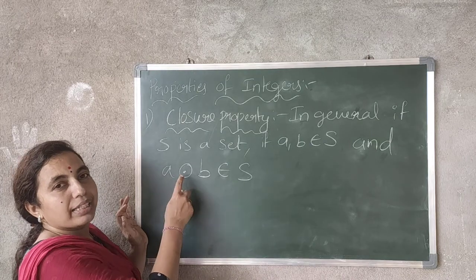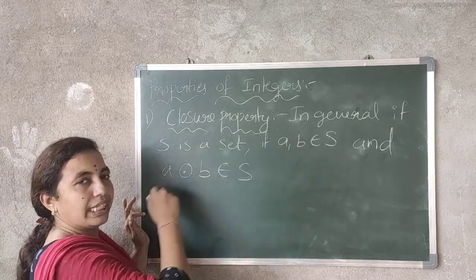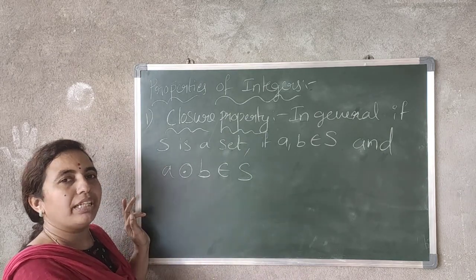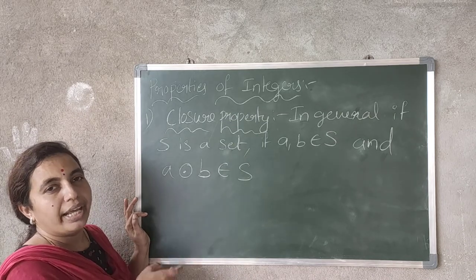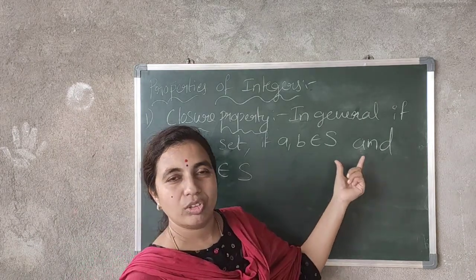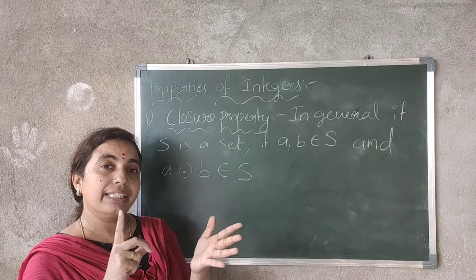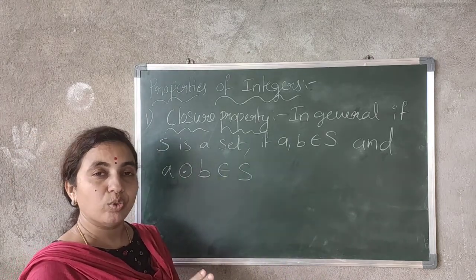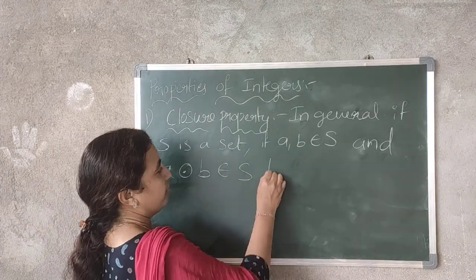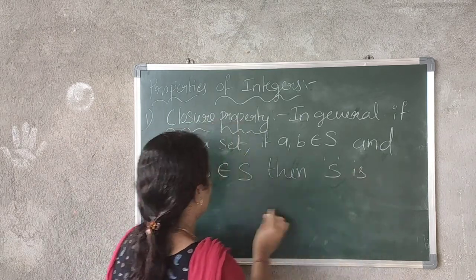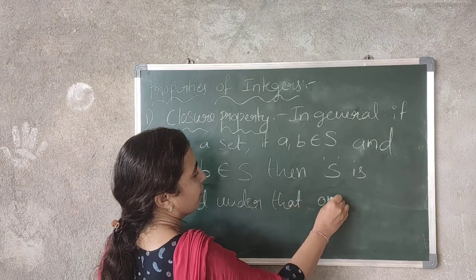That means: A plus B, A minus B, A into B, and A divided by B — all four operations we have to consider. So if, when you consider two elements of set S, A plus B is also an element of S, A minus B is also an element of S, A into B is also an element of S, and A divided by B is also an element of S, then we can say that S is closed under that operation.